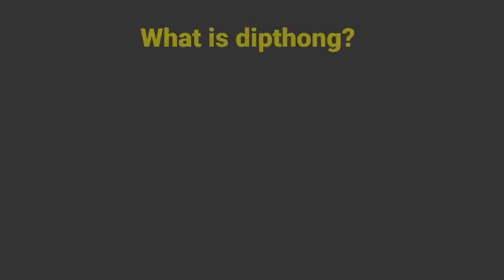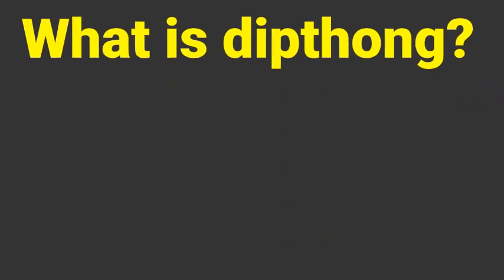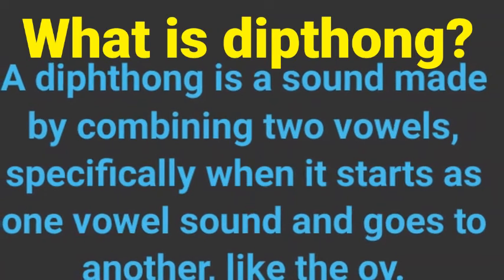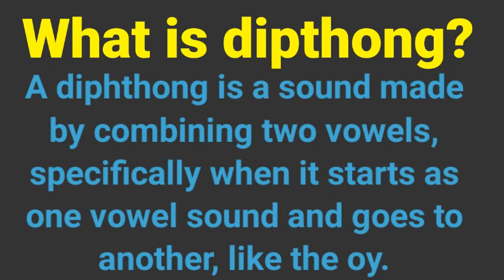اب ہم diphthong کی جانب آئیں گے۔ What is diphthong? A diphthong is a sound made by combining two vowels, especially when it starts as one vowel sound and goes to another.